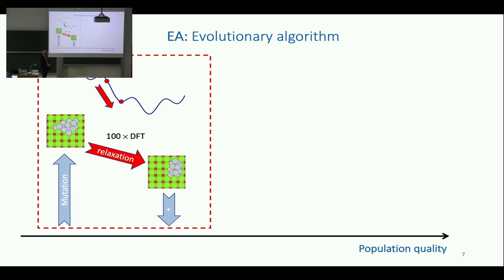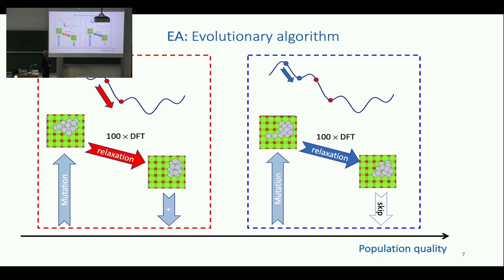This is called an evolutionary algorithm or genetic algorithm, where you carry along information from old structures you have considered. If you treat them as a population, you keep only the best ones — the ones most stable. You can automate it, and you're not hampered by human imagination — the computer just does this. It will not run dry of starting cases. It will sometimes make new guesses that are worse than those you had previously, but that's life when you adopt these methods.